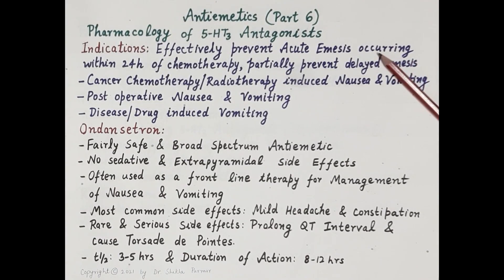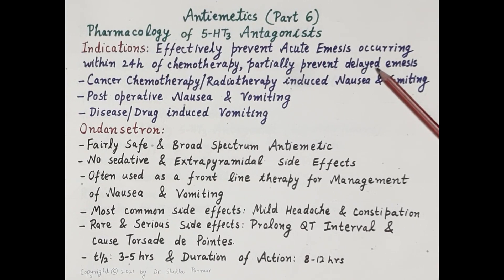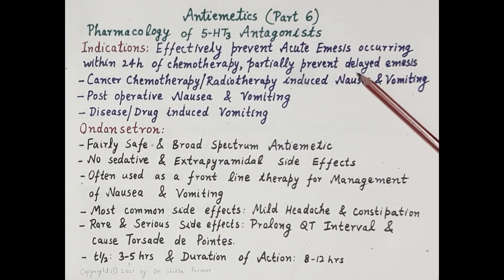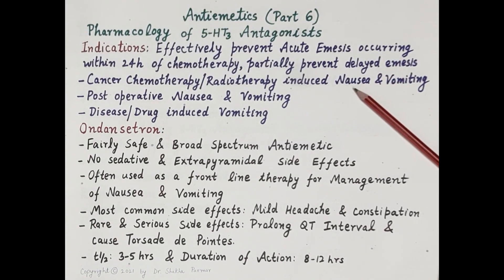Now let's discuss the indications of 5-HT3 antagonists. These drugs effectively prevent acute emesis, that is vomiting occurring within 24 hours of the administration of chemotherapeutic agents like cisplatin. However, these drugs only partially prevent delayed emesis, that is vomiting occurring after 24 hours of the administration of chemotherapeutic drugs.